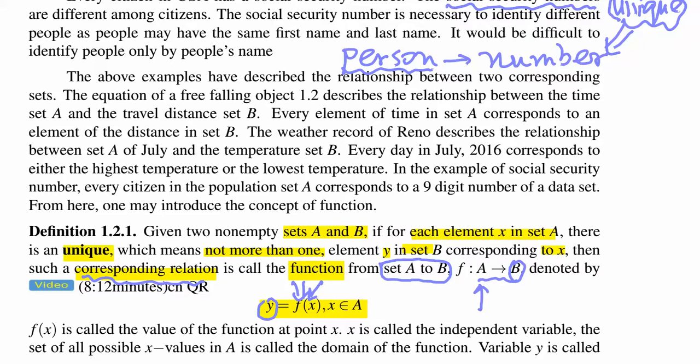And here we have a name for X. It is called the independent variable. So and then we have another name for Y, which will be called dependent. In the next page you will see dependent. Dependent variable for Y.